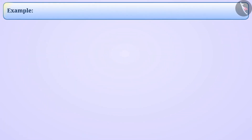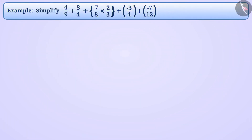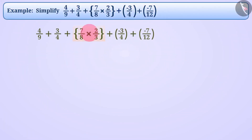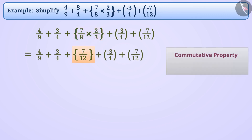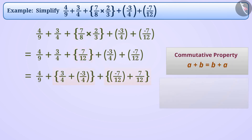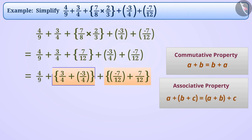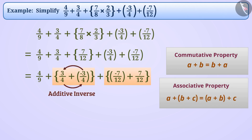Next example: simplify. First we solve the multiplication operation. Simplifying, 7/8 × 2/3 gives 7/12. Now with the help of commutative and associative properties of addition, we change the order and form groups. In one bracket we see that 3/4 and -3/4 are additive inverse of each other, therefore their addition is 0. Similarly, the addition of the other bracket is also 0.